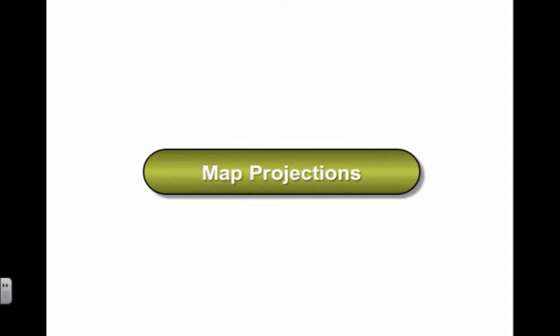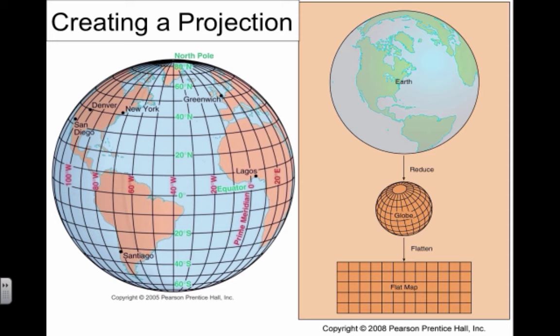The next section is map projections. When you take a three-dimensional object like Earth and want to shrink it down for an accurate projection, a globe is a map. But carrying 20 or 30 globes around is inefficient, so we flatten them onto two-dimensional paper or maps. In this case, you will always have some degree of distortion—you can't avoid it. Going from three dimensions to two, you will have distortion.